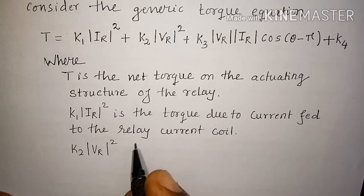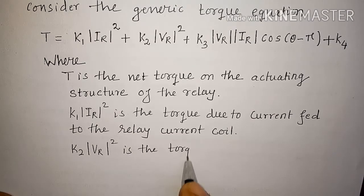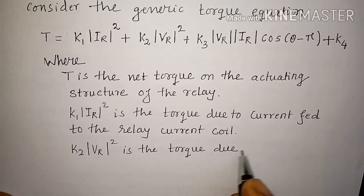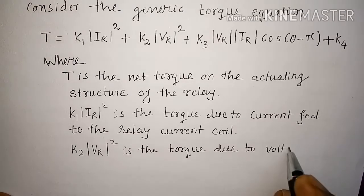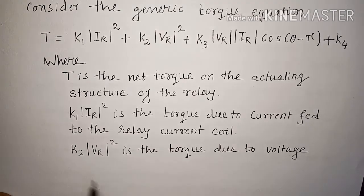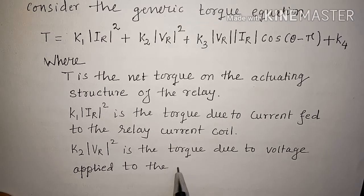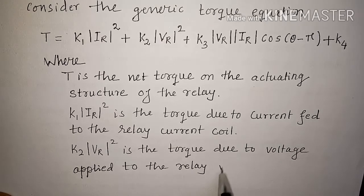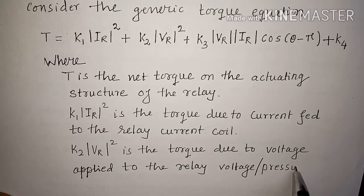K2 VR square is the torque due to voltage applied to the relay voltage or pressure coil.